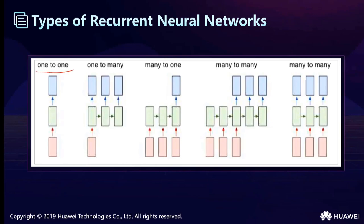RNNs have several configurations: one-to-one, one-to-many, many-to-one, and many-to-many. In many-to-many, one style calculates the output where each node affects the others, with inputs affecting outputs as the network moves through areas. The other style calculates output one-by-one directly.